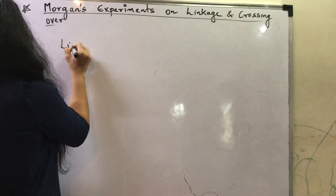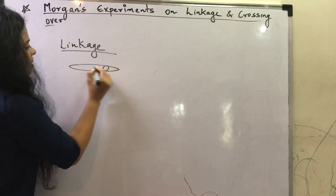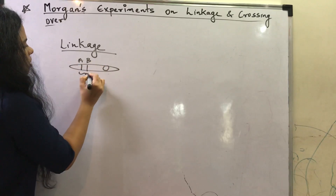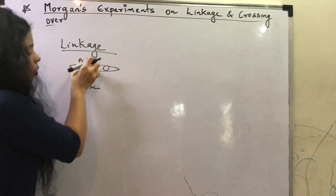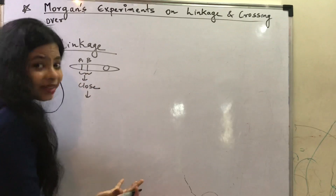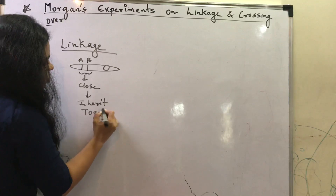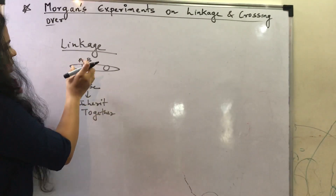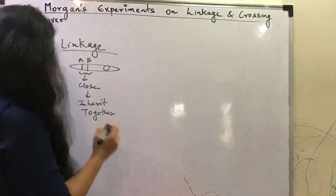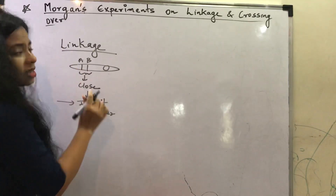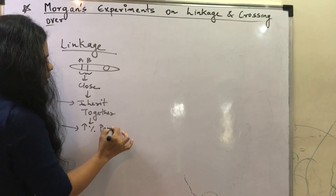First, what is linkage? Linkage is basically when two genes — let us consider two genes as capital A and capital B — these two genes are located close to each other. There are chances that they will be inherited together in the next generation. When genes are close to each other, you will obtain more percentage of parental type.